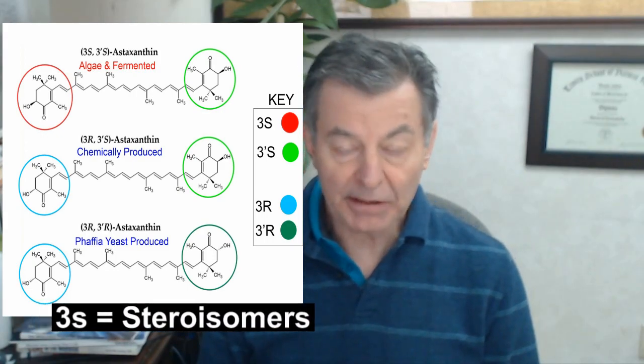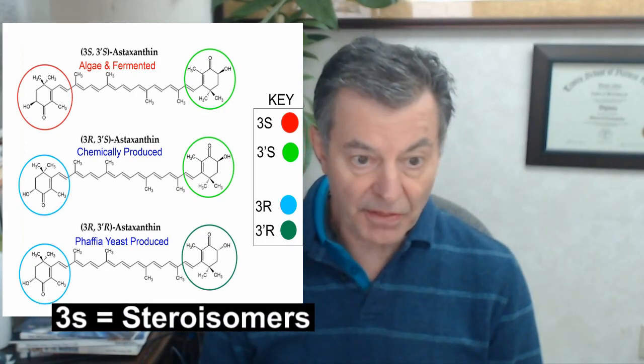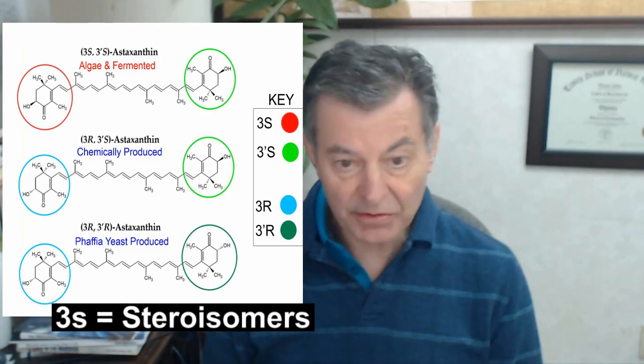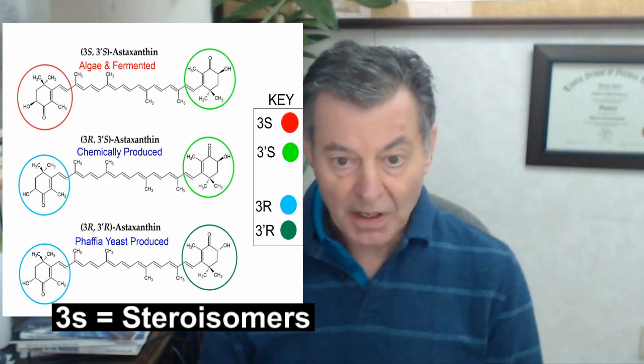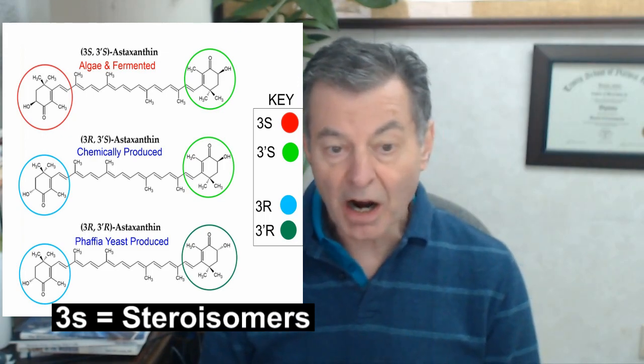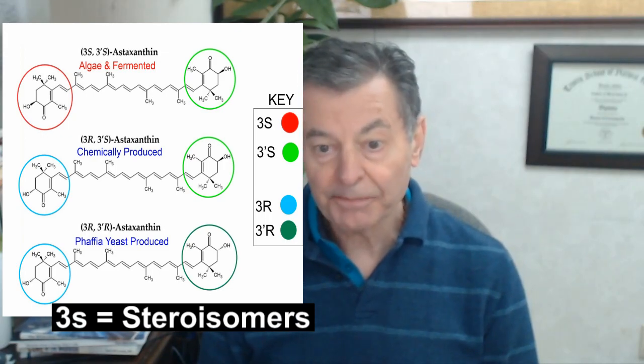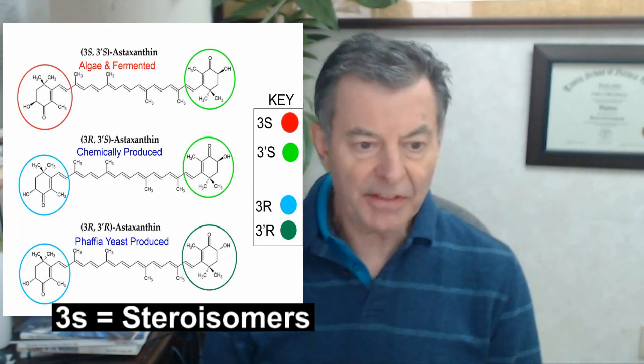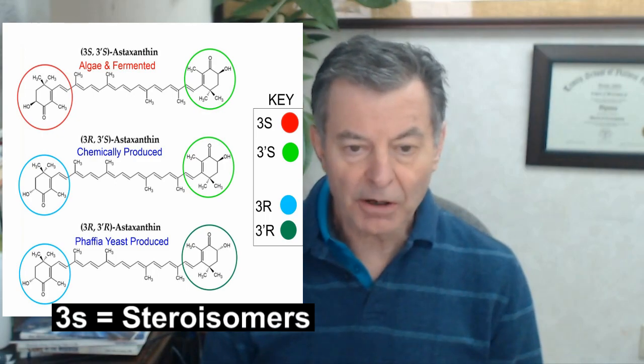If you look at chemically produced or synthetically produced astaxanthin, what you've got is 3R3S. So that's not the same thing at all.